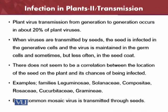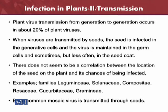Plant virus transmission from generation to generation through seeds occurs in about 20% of plants. When viruses are transmitted by seeds, the seed is infected in the degenerative cells. There is no correlation between the location of seeds on a plant and the chance of infection, since the infection is already present in the seed. Examples of plant families transmitted this way include Leguminosae, Solanaceae, Compositae, Rosaceae, Cucurbitaceae, and Gramineae. About 20% of diseases are transmitted through seeds, and bean common mosaic virus can also be transmitted this way.